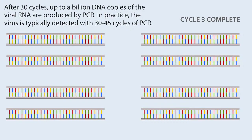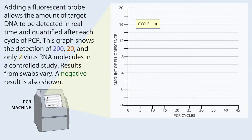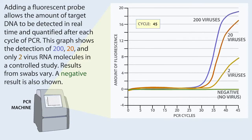In practice, the virus is typically detected with 30 to 45 cycles of PCR. Adding a fluorescent probe allows the amount of target DNA to be detected in real-time and quantified after each cycle of PCR. This graph shows the detection of 200, 20, and only two virus RNA molecules in a controlled study. Results from swabs vary. A negative result is also shown.